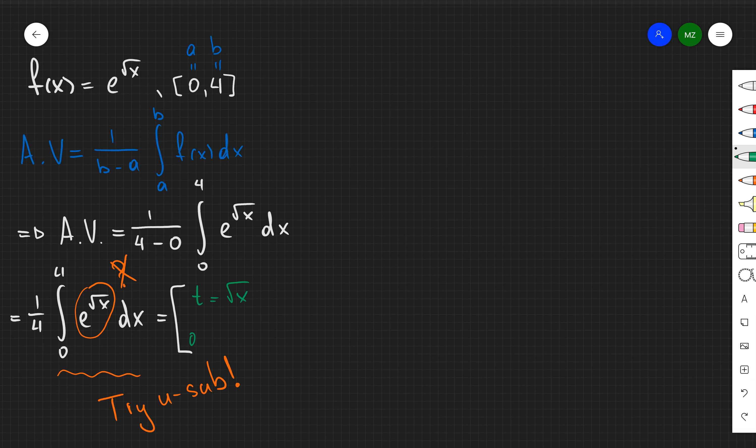So I'm going to set t equal to square root of x, then dt is going to be equal to 1 over 2 square root of x dx. And here you need to observe that we need to find the boundary points. The boundary points are going to be t at 0 is 0, and t at 4 is going to be equal to 2.